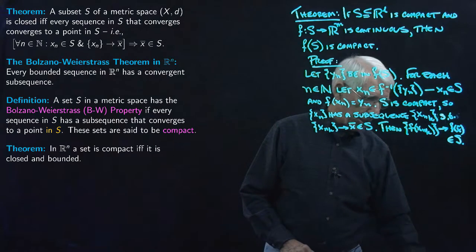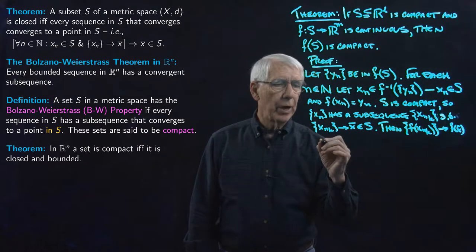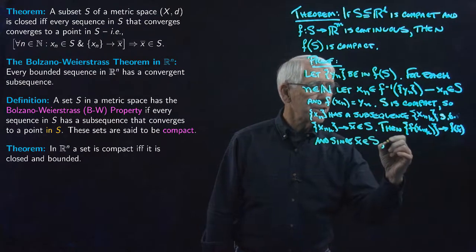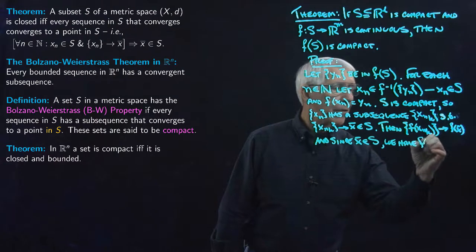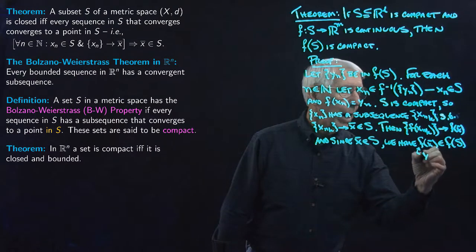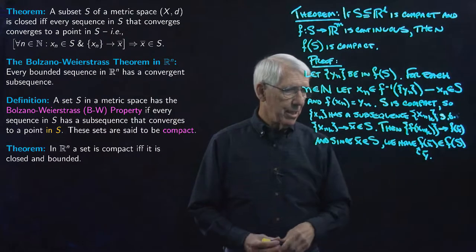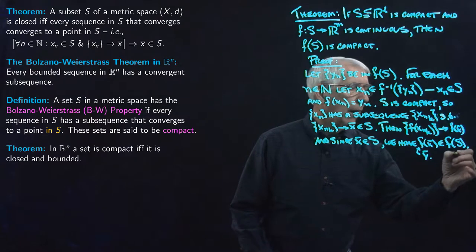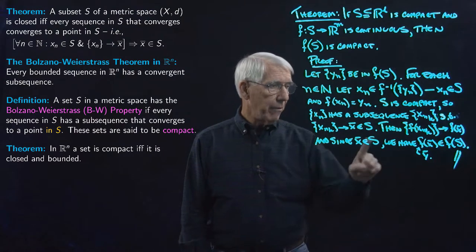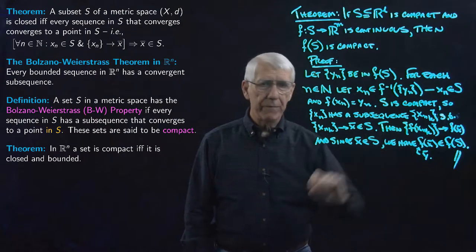Since X-bar itself is in S, we have F(X-bar) in F(S). We could call that Y-bar if we like — X-bar maps to a point Y-bar which is in F(S) because X-bar is in S. That finishes the proof: we started with an arbitrary sequence in F(S) and constructed a subsequence that converges to a point in F(S) as well.